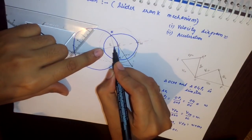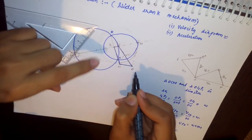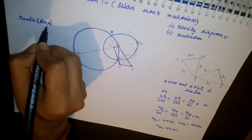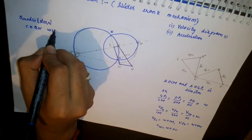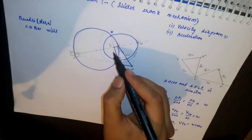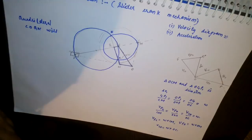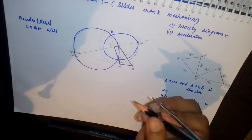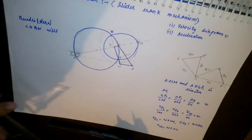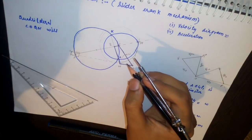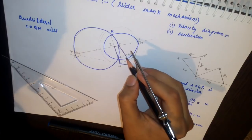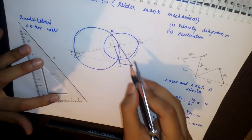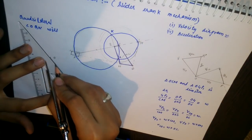The quadrilateral COQN will give the acceleration diagram. To understand how this quadrilateral is useful for finding acceleration of the various links, we draw the actual acceleration diagram. Since CO is moving with constant angular velocity omega, the radial acceleration of CO will be along the line CO. Let the fixed point be O, so the radial acceleration of CO is along CO.